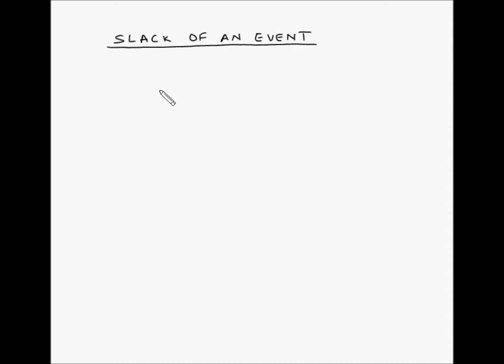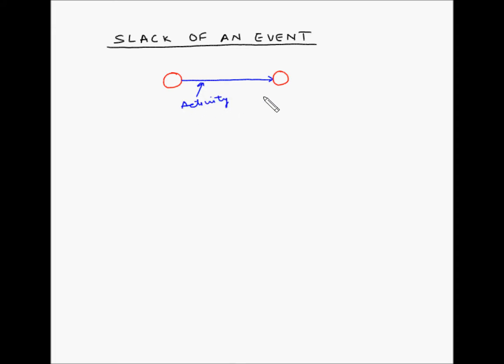In the AOA, or activity on arc, network method, the event is represented as a node. Suppose these two are two events and between these events this can be an activity. So this is an activity and this is an event. Slack of an event means the flexibility in the occurrence of any event in a project network diagram.